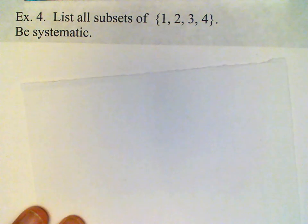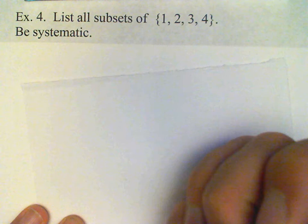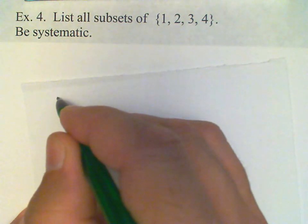So let's see. We have subsets for any given set, and that exercise usually requires that we be somewhat systematic, because it's real easy to lose track if we're not consistent and systematic in the process. Okay, so for practice, let's list out all the subsets of the set consisting of the elements 1, 2, 3, and 4.